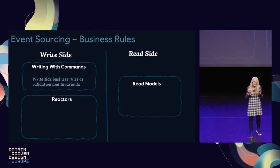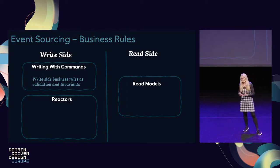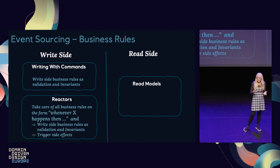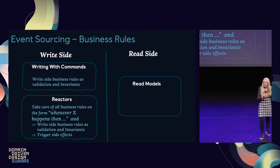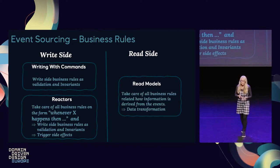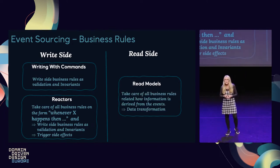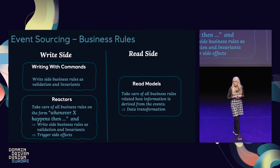Writing with command takes care of all the invariants — all the rules that need to be true when data is at rest, and validation. Reactors do the same, but in addition handle all those rules: whenever this happens, that should happen, and they perform the side effects. And the read model — it's easy to think that the read model doesn't contain business rules, but there can be a lot of business rules on the read model. For example, if we want a report estimating cost per person in the canteen, there are a lot of rules for actually extracting that from the events.